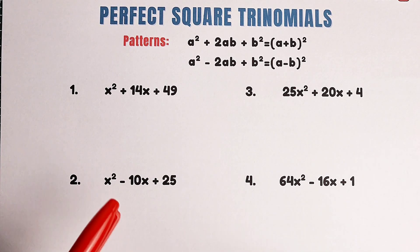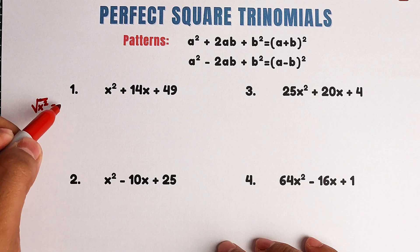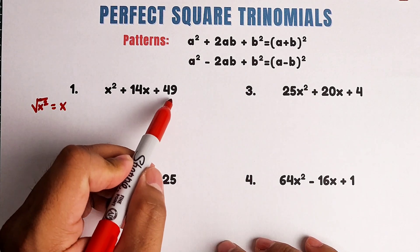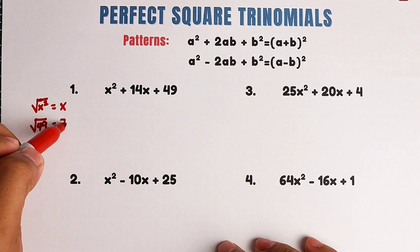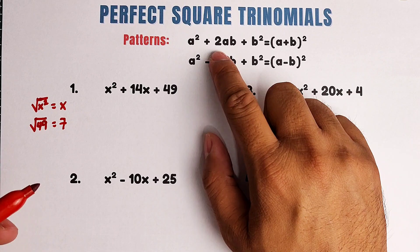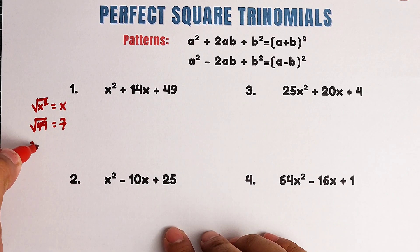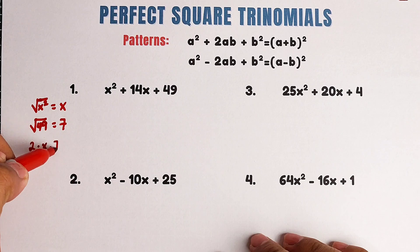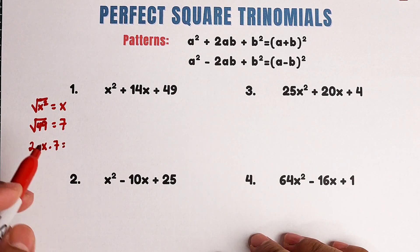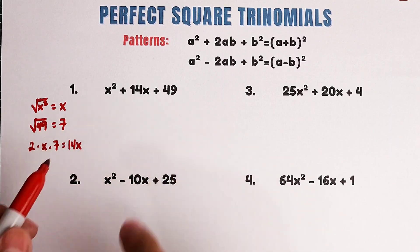For you to understand well how we're going to know if this one is a perfect square trinomial, let's get the square root of the first term. The first term is x squared. The square root of x squared is x, meaning the first term is a perfect square. Next, let's get the square root of the third term, which is 49. The square root of 49 is 7. Now we will see if we multiply this value by 2, we'll come up with 14x. So we have 2 times x, which is the value of a, times the value of b, which is 7. Then 2 times x is 2x, times 7, that would be 14x. And as you can see, we've got the middle term, meaning this trinomial is a perfect square trinomial.